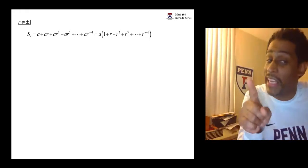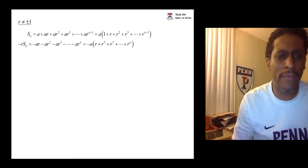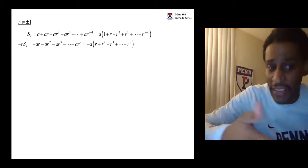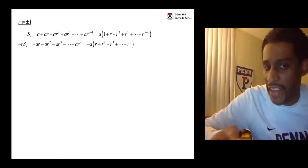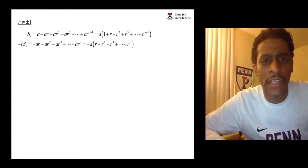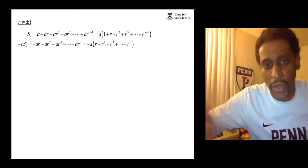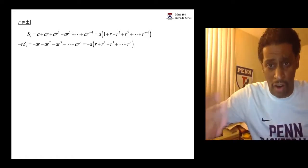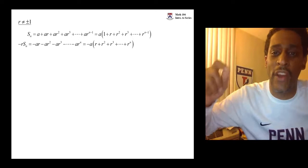Now we're going to take that exact same S sub N and multiply it by negative R. So instead of A, we have negative AR. Instead of AR, we have negative AR squared. Instead of AR squared, we have negative AR cubed and so on. Factor out a negative A from all of those terms. You'll be left with an R and an R squared and an R cubed. And the last term will be an R to the N.